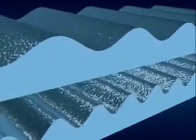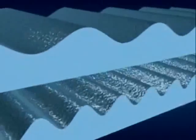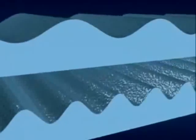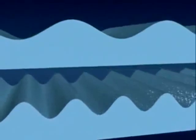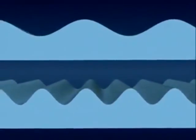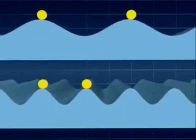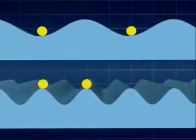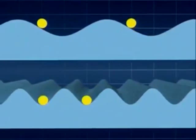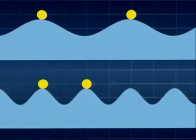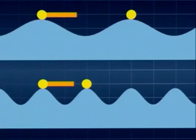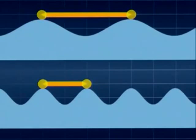These waves are both transverse, but they look different. The difference is the distance from one peak to the next. It's called the wavelength and is measured in metres. The top wave has double the wavelength.